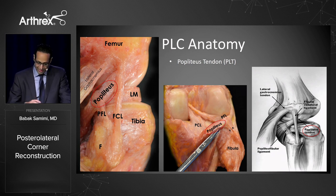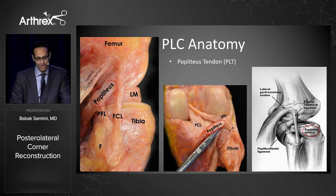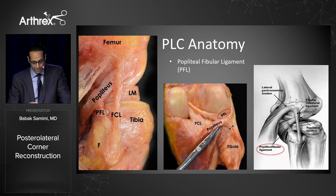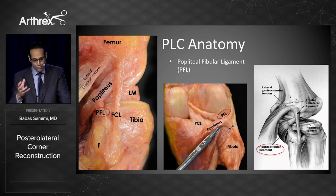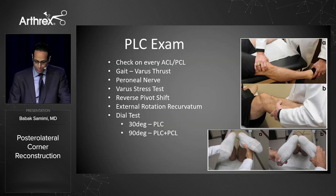The popliteus tendon insertion is a little bit more anterior and lateral on the epicondyle. It runs deep to the fibular collateral ligament, has a muscular attachment on the posteromedial tibia, and has an intra-articular component. The popliteofibular ligament comes off the musculotendinous attachment of the popliteus and attaches more to the posterior aspect of the fibula, as opposed to the FCL which attaches more anteriorly.